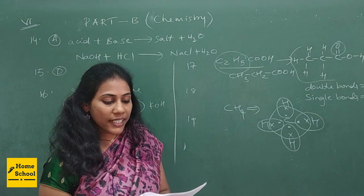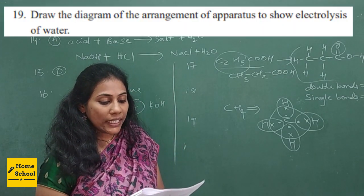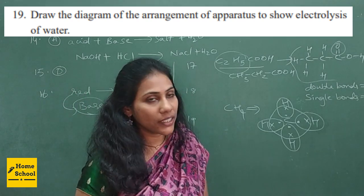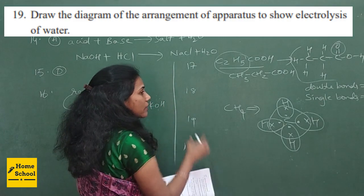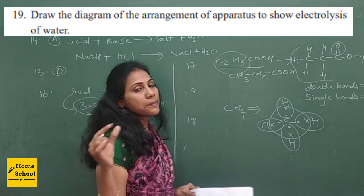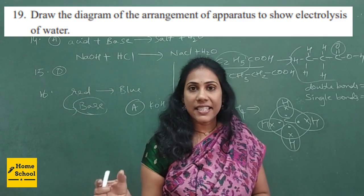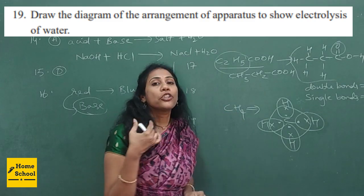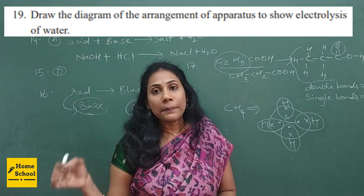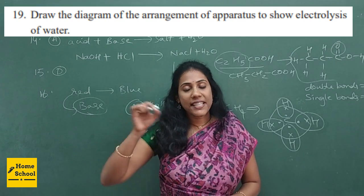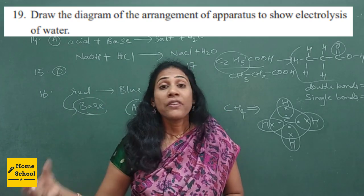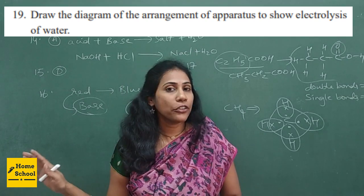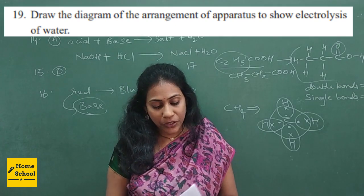Question 19 is a diagram question: 'Draw the diagram of the arrangement of apparatus to show electrolysis of water.' Electrolysis of water comes from the first chapter — chemical reactions and equations. You have to neatly draw the diagram and label all the components: which is the cathode, which is the anode, where hydrogen is produced, and where oxygen is liberated.